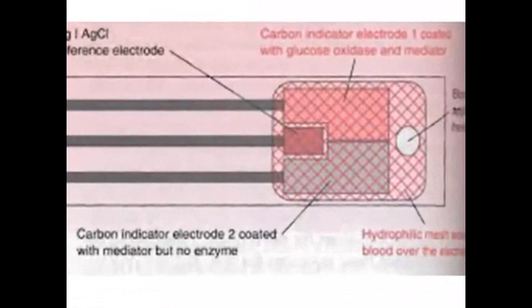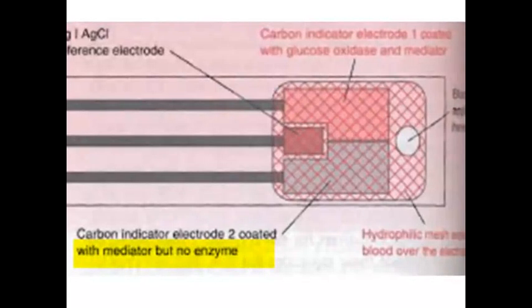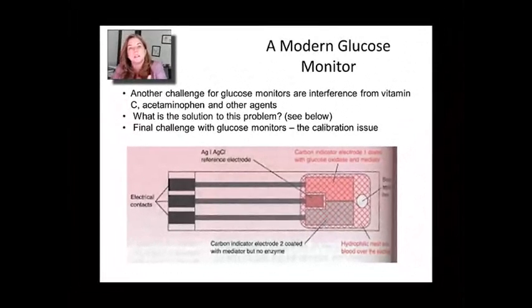They deal with it because they built an extra electrode. At the bottom is indicator two electrode which has the mediator, the ferricyanide-ferrocyanide couple, but doesn't have glucose oxidase. If you get a signal from that second electrode, that's an interfering agent and you can subtract it from the total signal. That's a clever way to deal with interfering agents because glucose oxidase really only reacts with glucose. You can correct for vitamin and other substance interference this way.